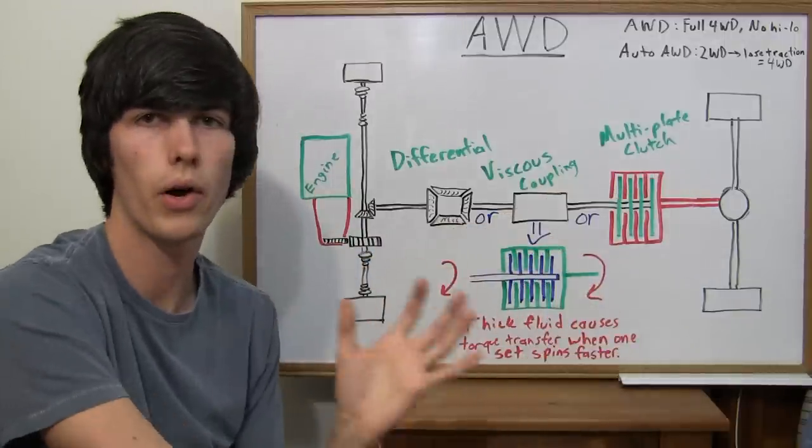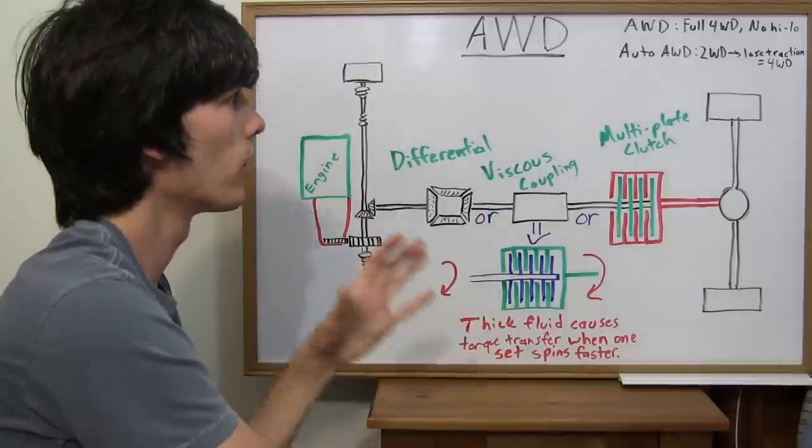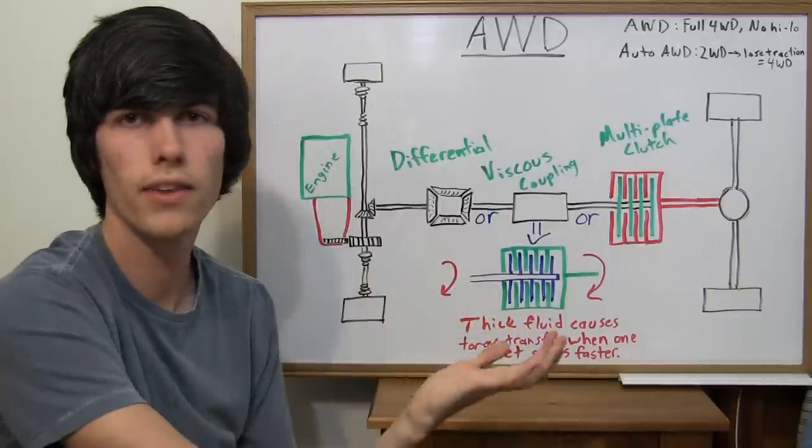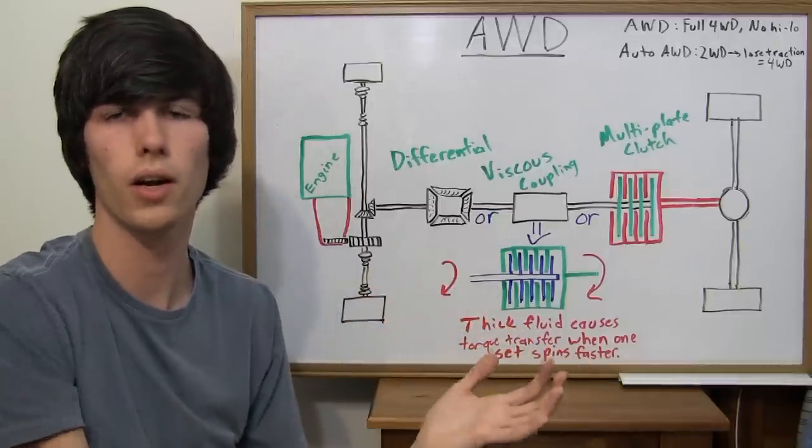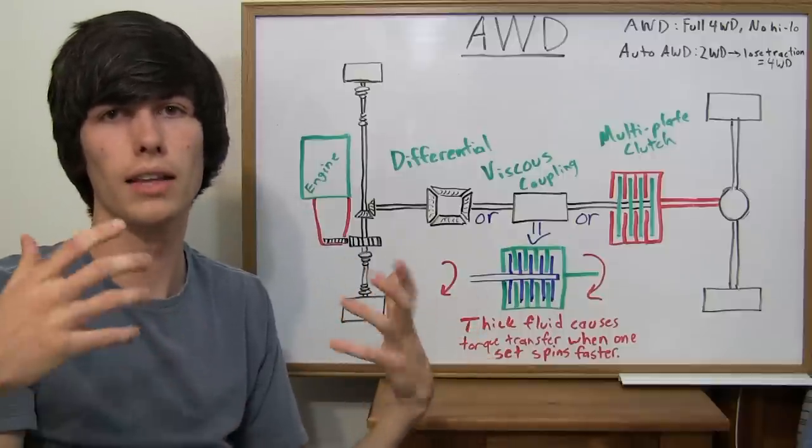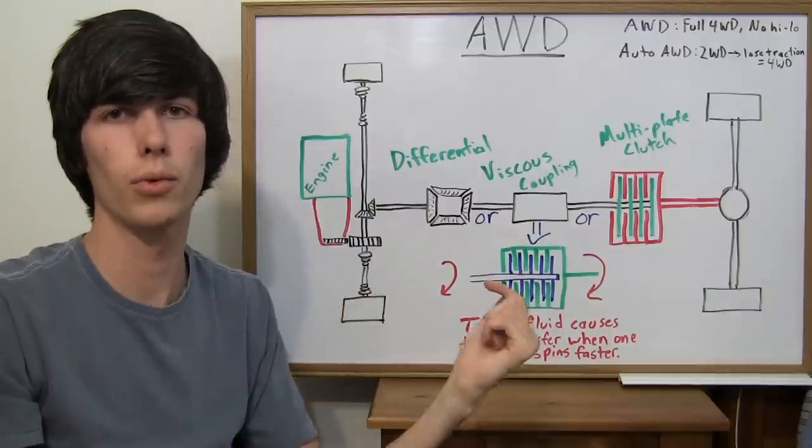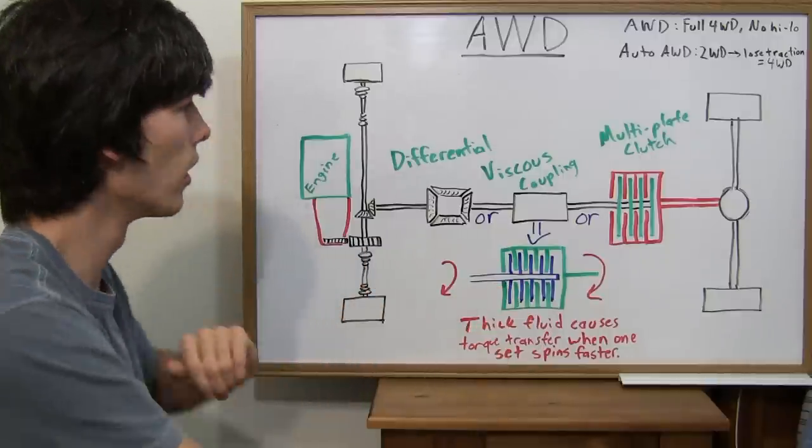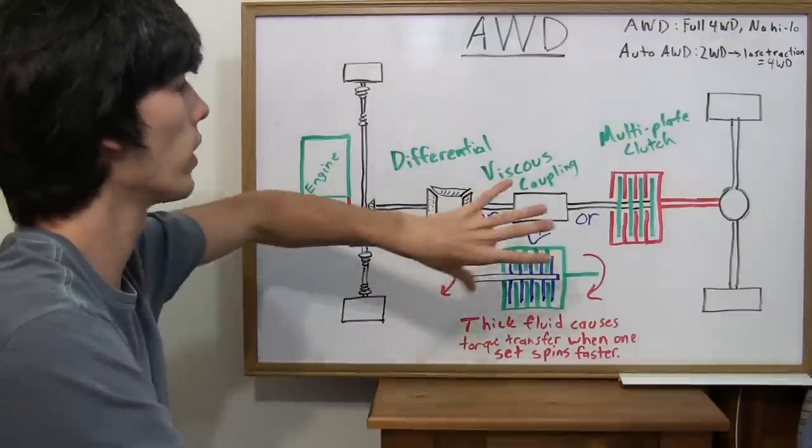All right, now let's talk about automatic all-wheel drive. So, automatic all-wheel drive, this can be found in something like the Honda CR-V, where it'll be front-wheel drive unless you lose traction, and then it will send traction to the rear tires. So, let's look at how that would happen.